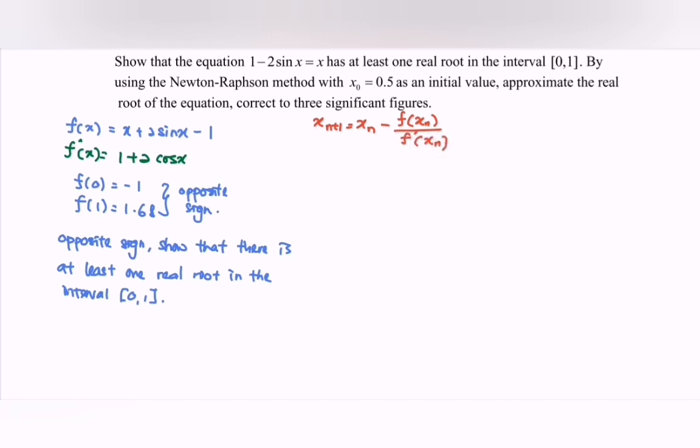Substitute the values. x₁ = 0.5 - [0.5 + 2sin(0.5) - 1]/[1 + 2cos(0.5)]. By referring to the calculator, x₁ = 0.33346.